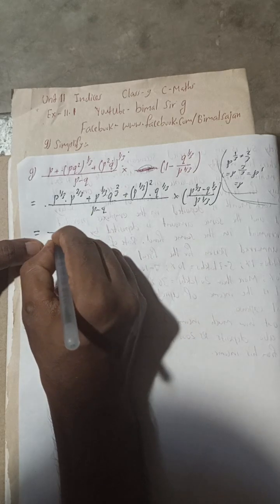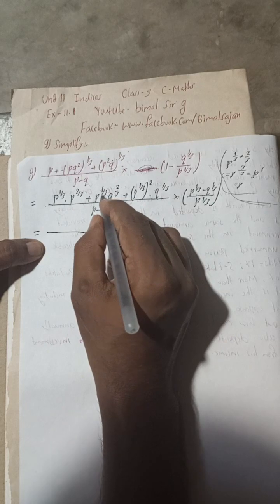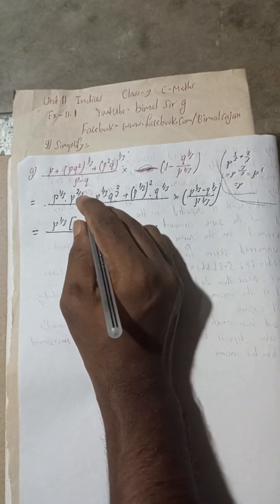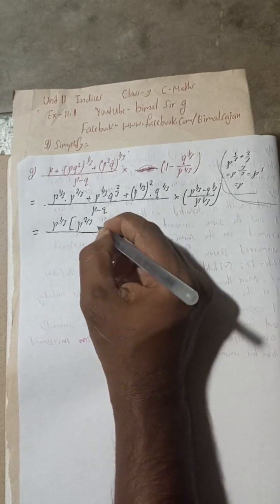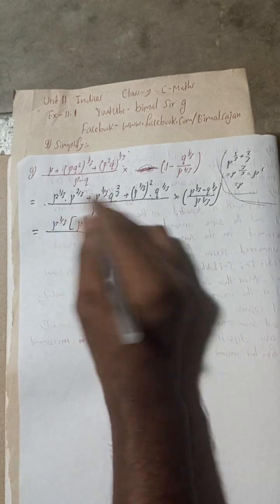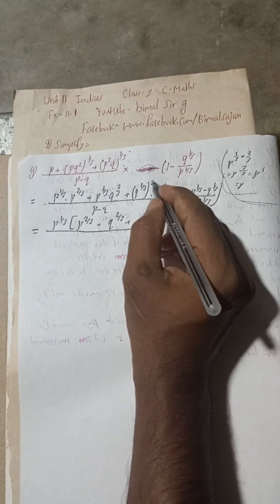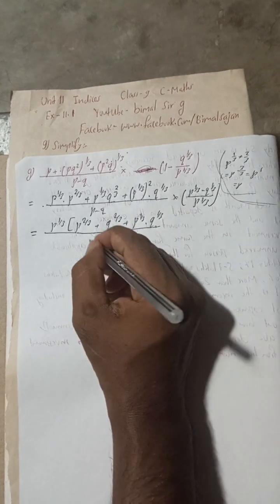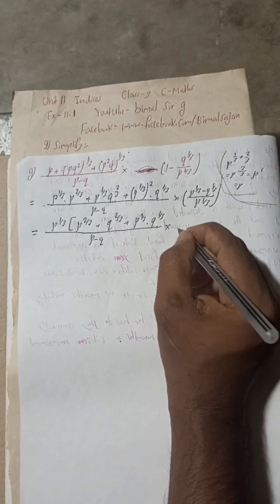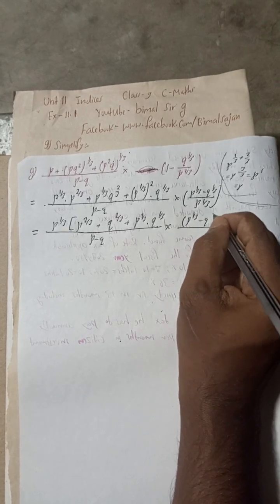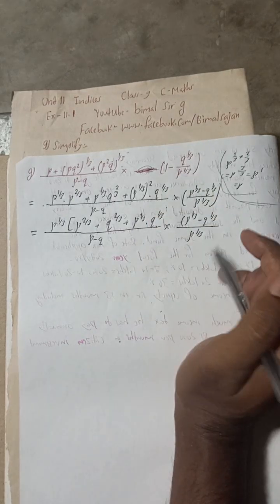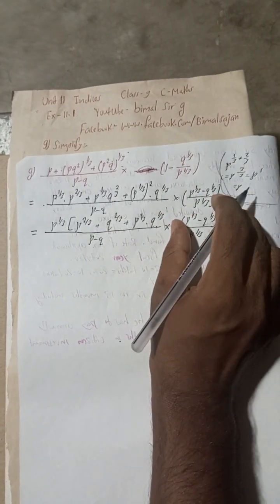Now we can take P^(1/3) as a common factor from the numerator. Taking P^(1/3) outside, we are left with P^(2/3) plus Q^(2/3) plus P^(1/3)·Q^(1/3) inside the bracket, and then divided by P minus Q times the bracket P^(1/3) minus Q^(1/3). Since there is no power on the bracket, we can keep it as is.